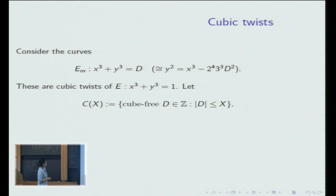Ed: x cube plus y cube equals D. Then it is an elliptic curve and it is a cubic twist of Fermat curve E1. Then this curve relates to the problem which integers can be written as a sum of two cubes. So let's define the set C(X). It is a cube free integer with absolute value at most X.